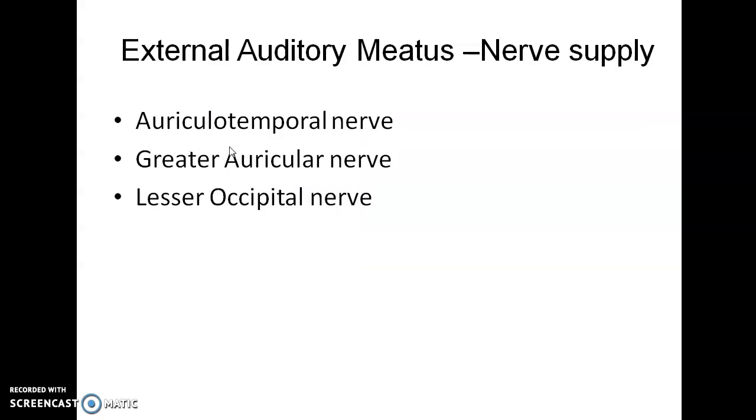The nerve supply with similar name auriculotemporal nerve. And one big nerve will be there called greater auricular nerve. And one tiny nerve will be there on the occipital bone called lesser occipital nerve.